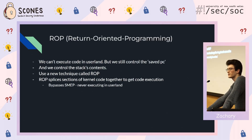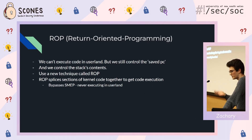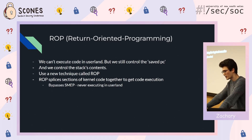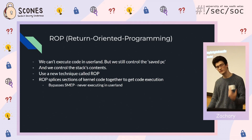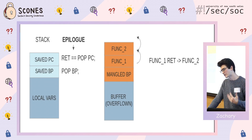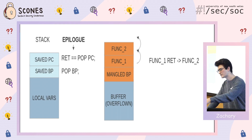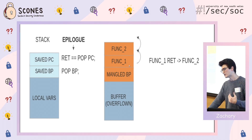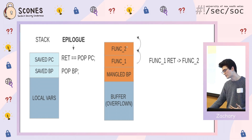Since we can't execute code in user land under SMEP, we use Return Oriented Programming (ROP). We still assume control over the saved PC and arbitrarily control the stack's contents. The idea: instead of executing code in user land, we just use existing kernel code and splice it together. Because we're technically never executing in user land, SMEP never gets triggered. Each function ends with a return instruction that pops the PC — so by overflowing the buffer we can chain functions together, with each return handing execution to the next address on the stack.